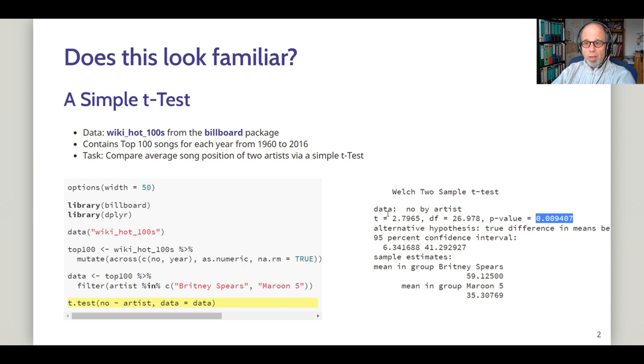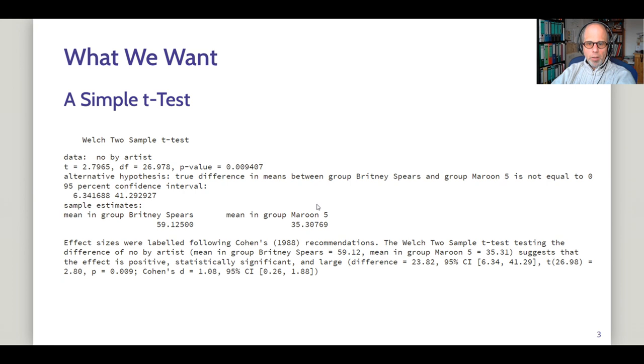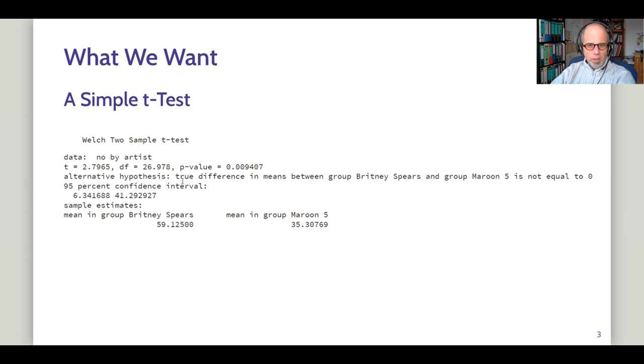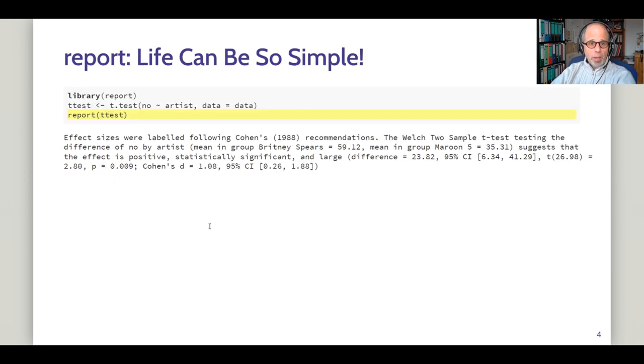But what we really want is a paragraph of text that describes what we found out with this test. So if a fairy came along and granted us one wish, we might want to have a magic button that gives us this text output at the bottom from the t-test at the top. So here in this presentation, I have this magic button. I can just simply move my mouse to get this text paragraph and I'll show you in a moment how to do that in R.